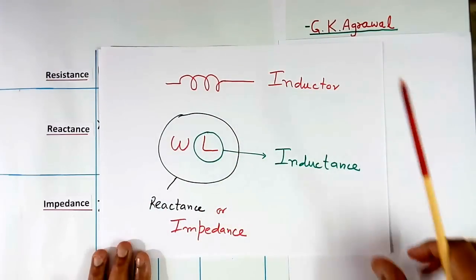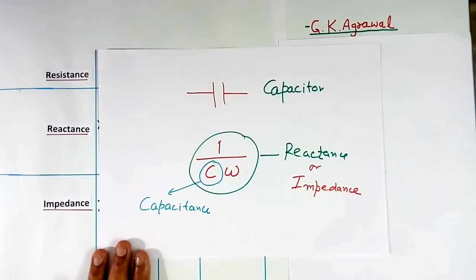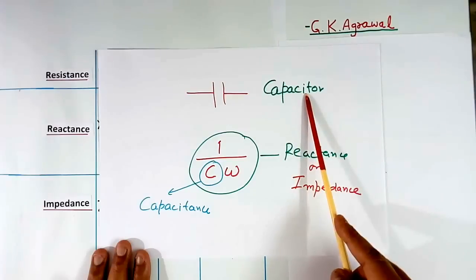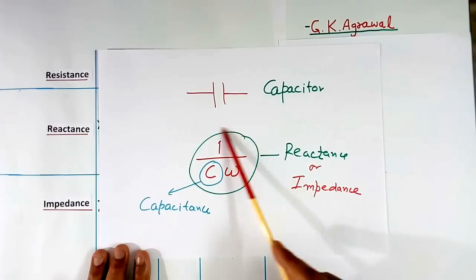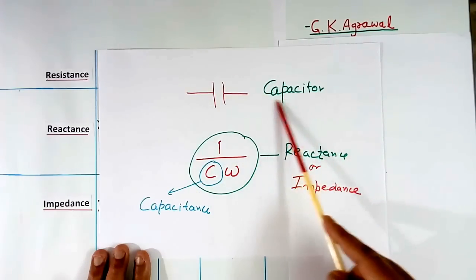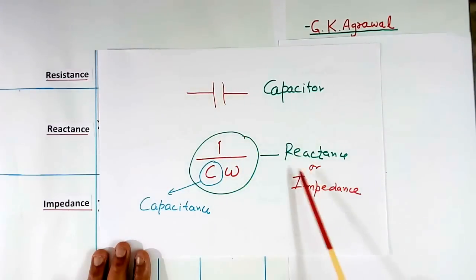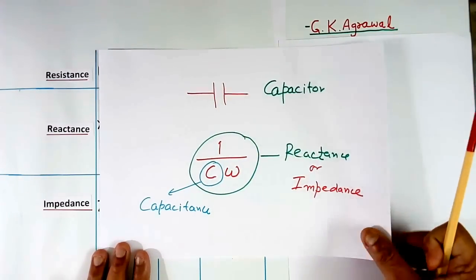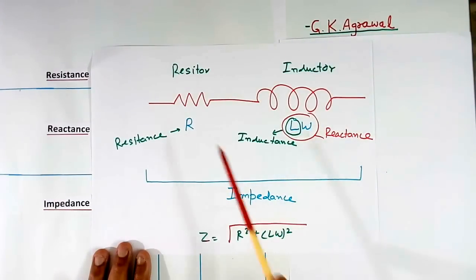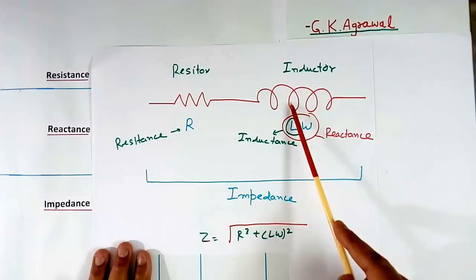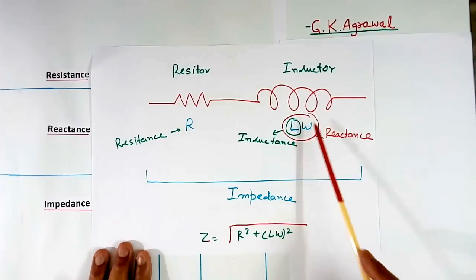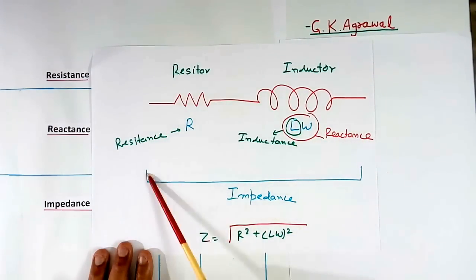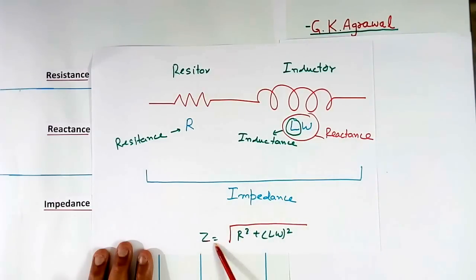Similarly, this is a capacitor, so this is the capacitance, this full expression is reactance, and capacitor is the name of this item. This reactance is also called impedance. If resistor and inductor both are there, then this is resistance, this full expression is reactance, and this total from here to here is called impedance, equal to square root of R squared plus (L omega) squared.